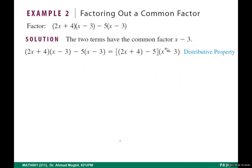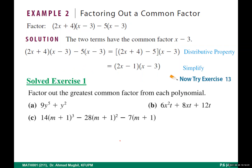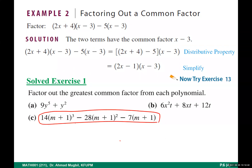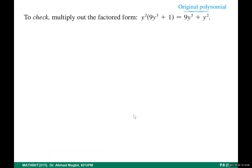When you want to factor any expression, always start by asking yourself: is there a common factor? I will skip this solved exercise — it is already solved for you. Look at it: the GCF between 14, 28, and 7 is 7. For (m+1) to the powers 3, 2, and 1, you take the smallest — (m+1)¹. The answer is already shown for you.